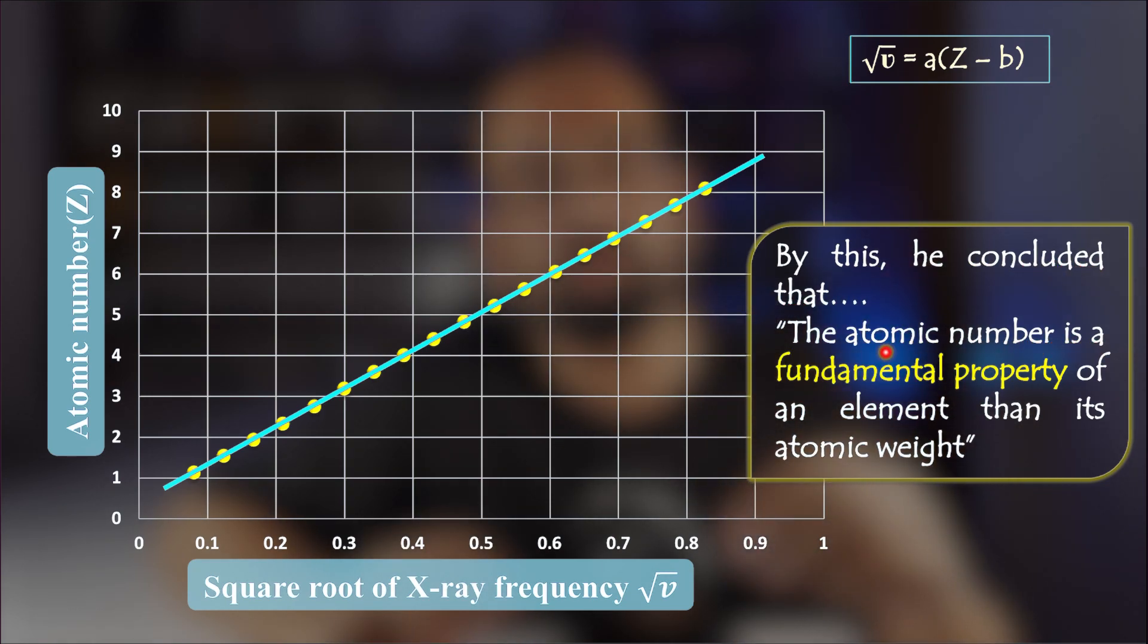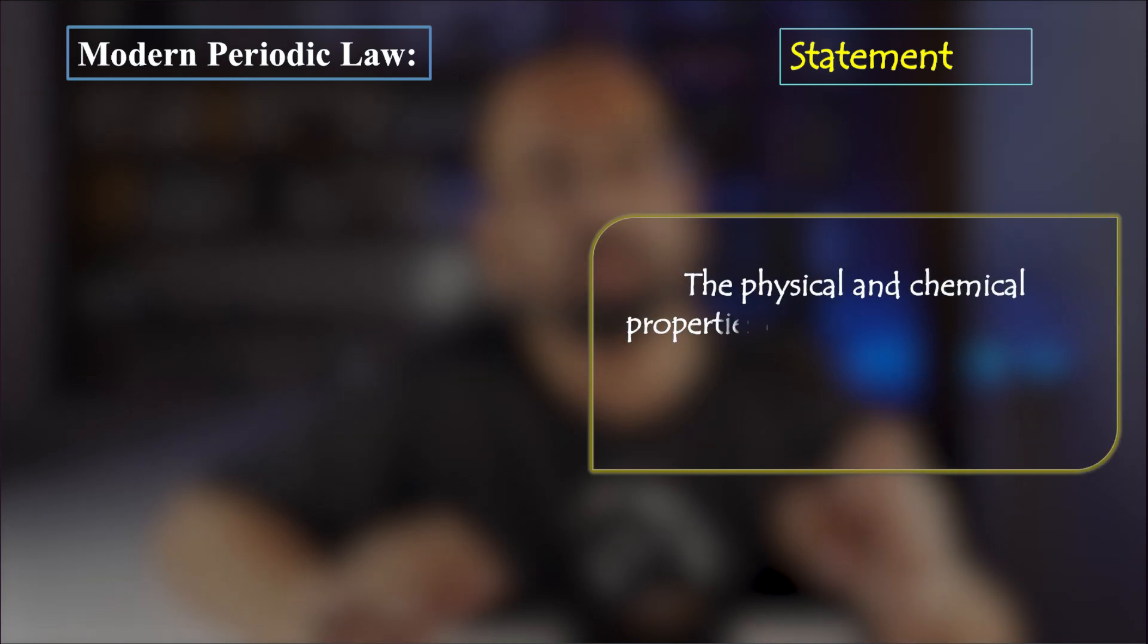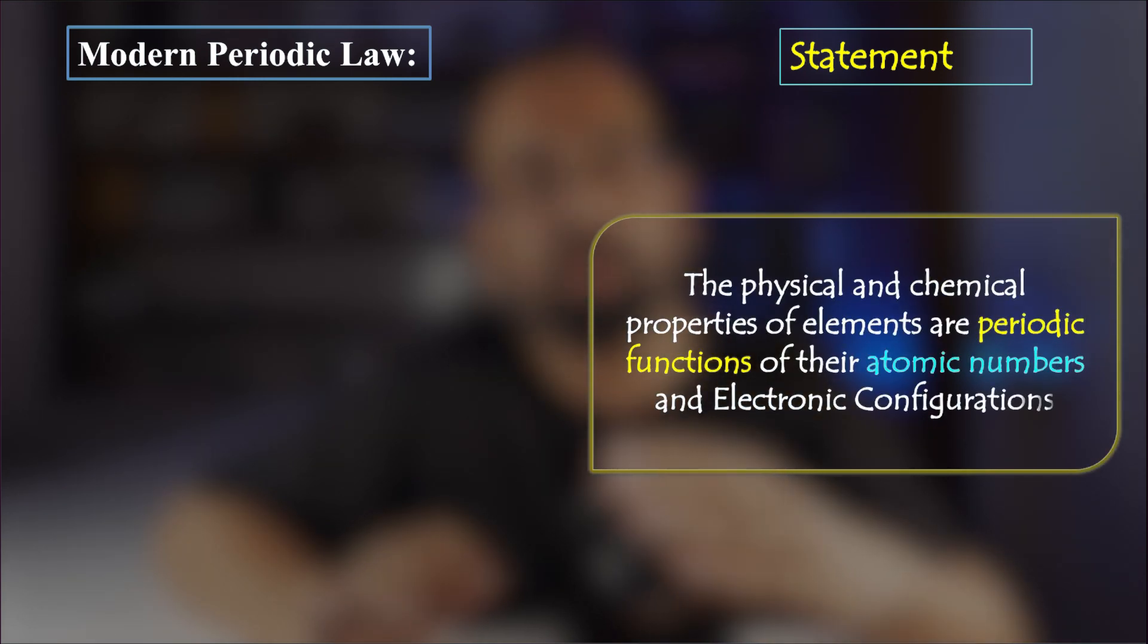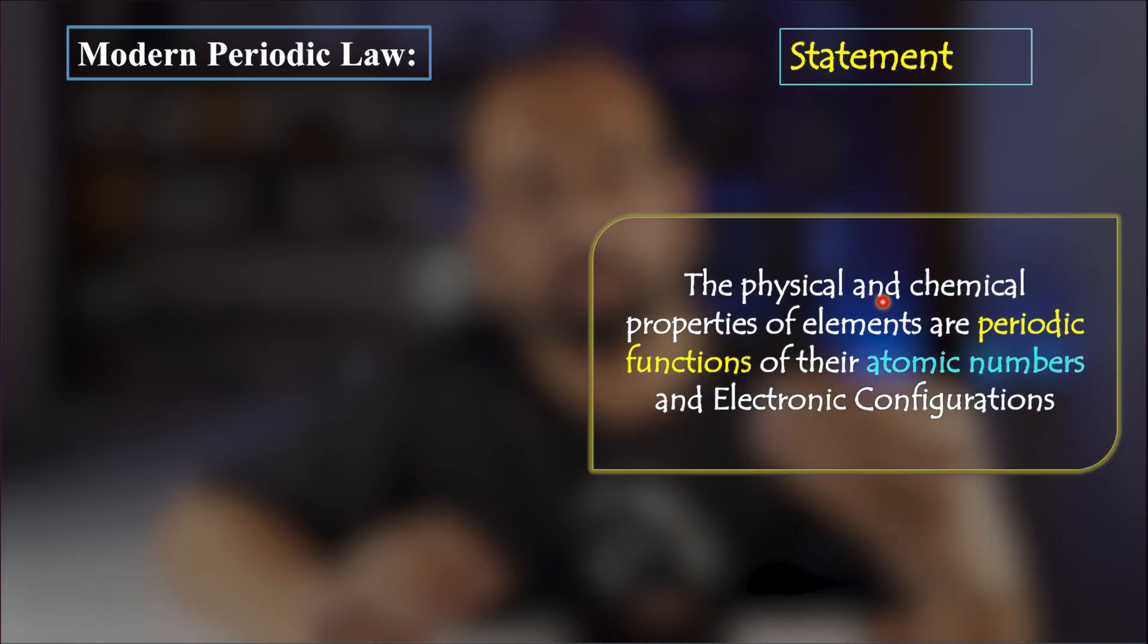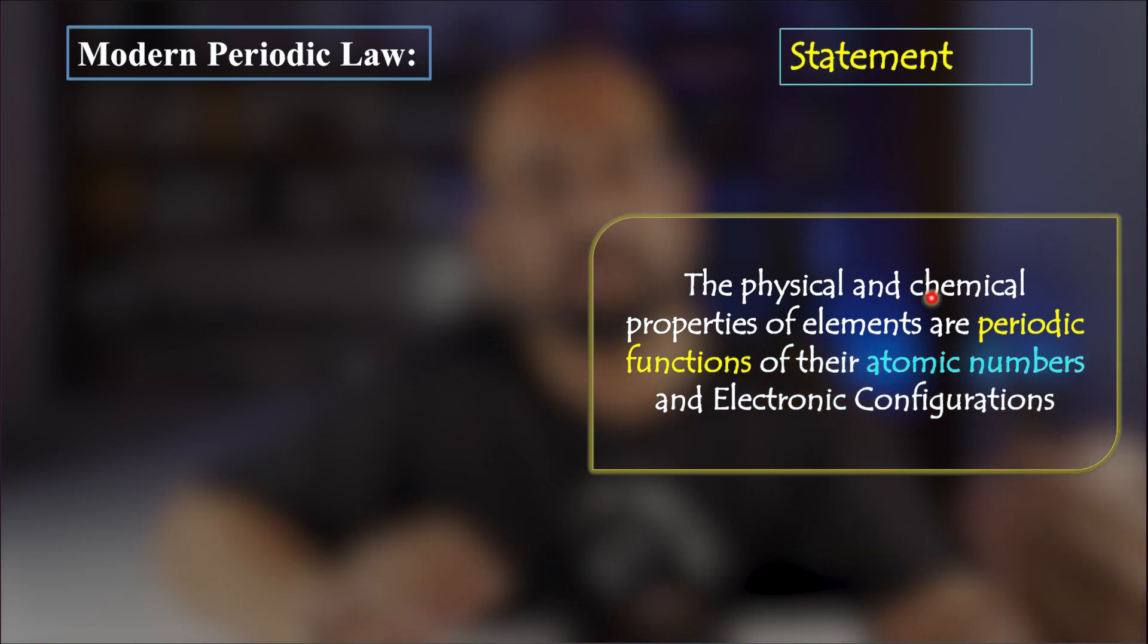Moseley's law is important because it established that the atomic number is not just a positioning number in the periodic table, but it also decides the physical and chemical properties of the elements. So finally, his statement was the physical and chemical properties of the elements are periodic functions of their atomic numbers and electronic configurations.